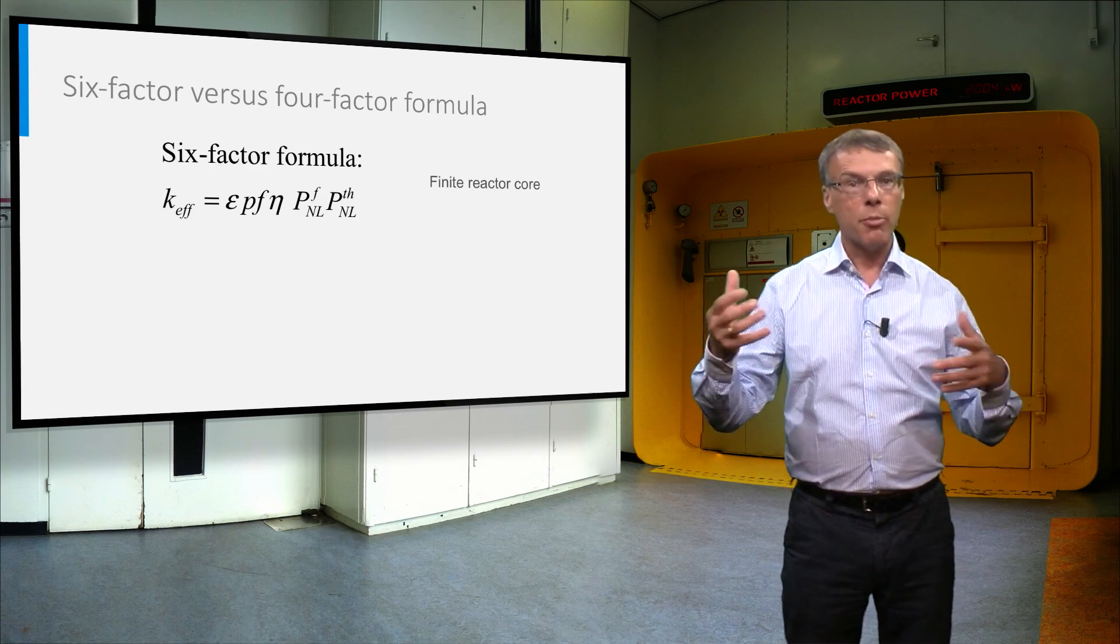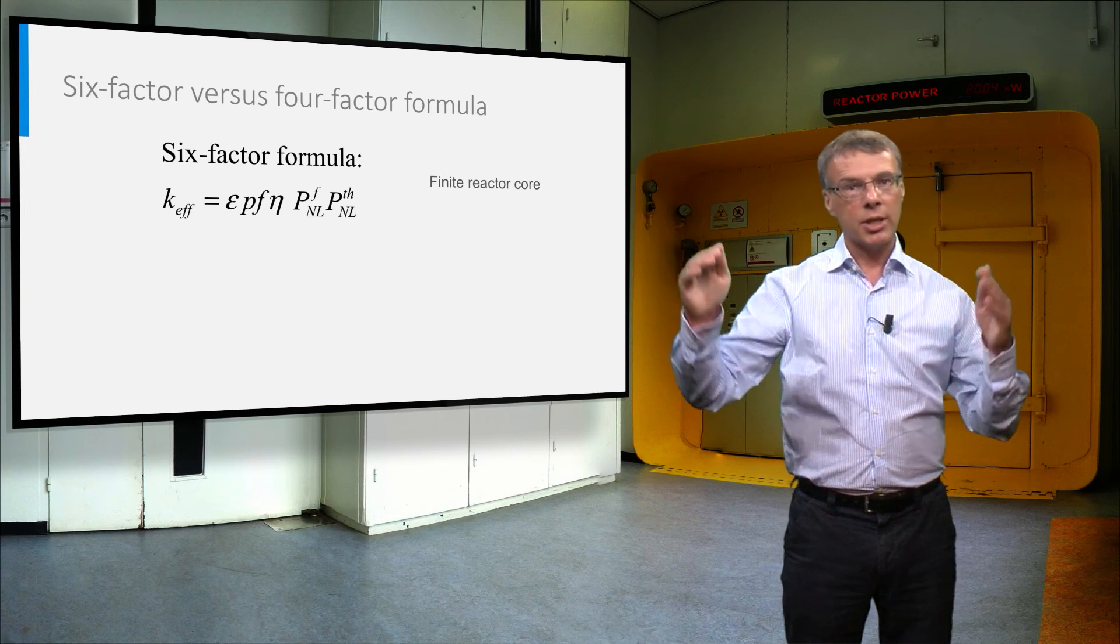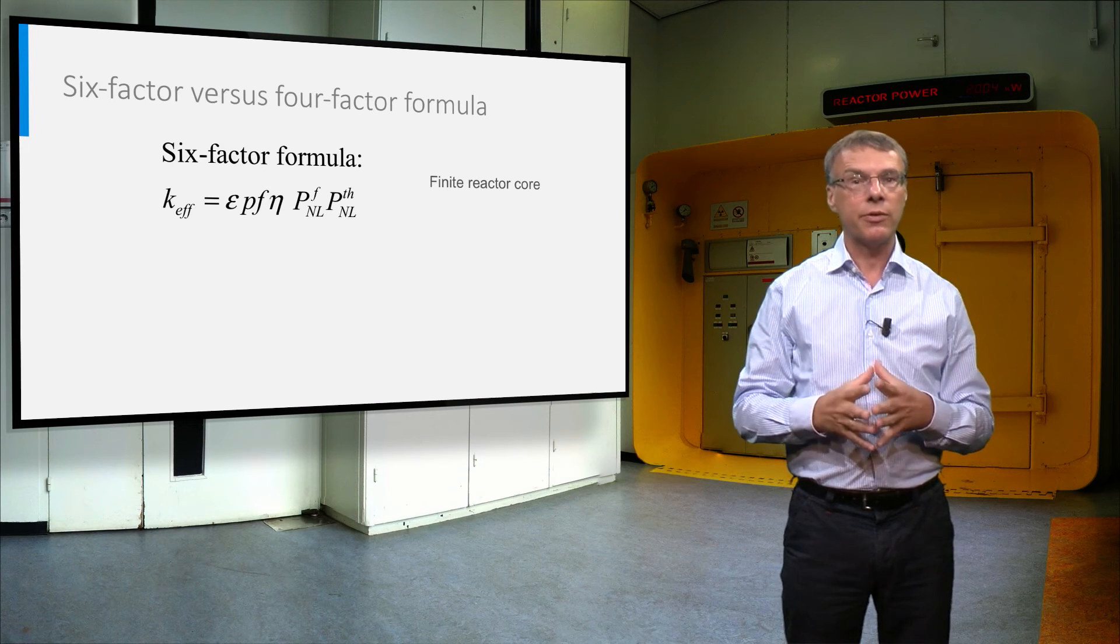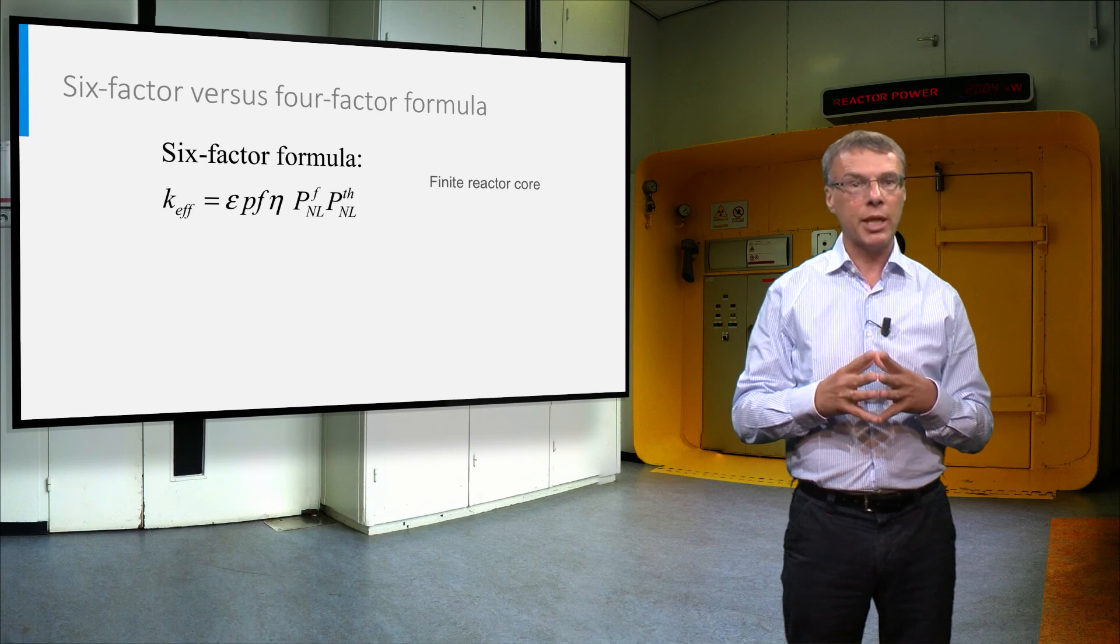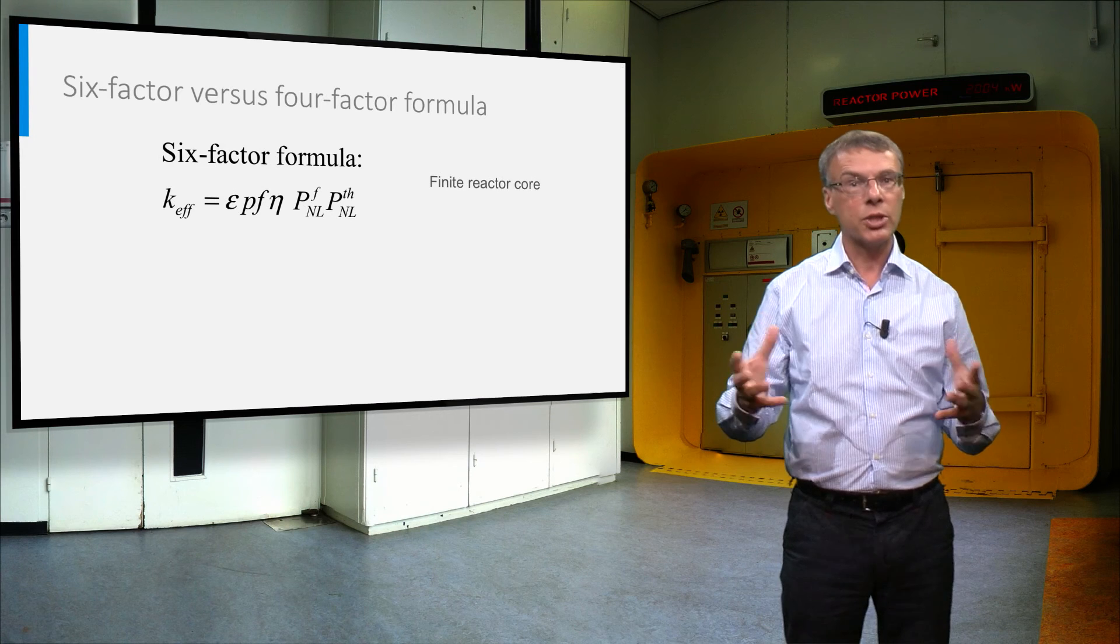We can now wrap up by calculating the ratio of the number of neutrons at the end of the neutron lifetime and the number of neutrons we started with. And this ratio is defined as the effective multiplication factor k-effective, and is given by the six-factor formula on this slide.